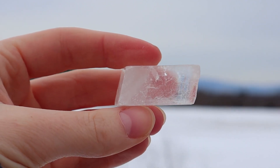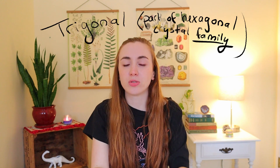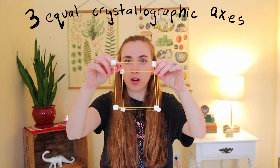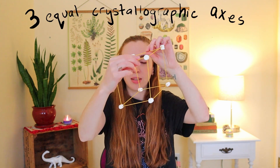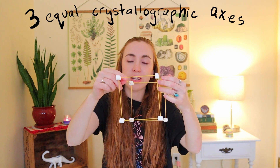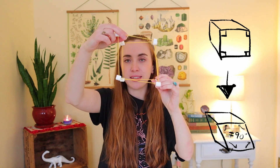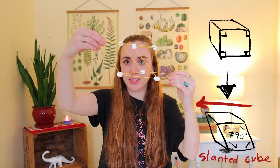Speaking of trigonal, next I'm going to talk about the trigonal crystal system, which is very similar to the isometric crystal system. I don't even have to build a new model for this because all of the axes in a trigonal crystal system are the same length — it's just that their angles change. None of the angles are 90 degrees, so it kind of just makes this cube a slanted cube, or a rhombohedron. I guess it's good that what I built wasn't very stable.